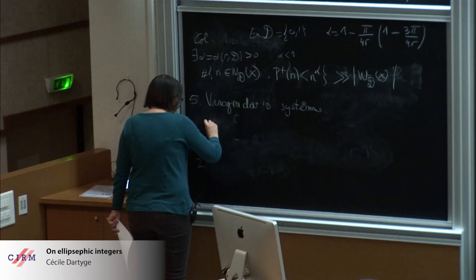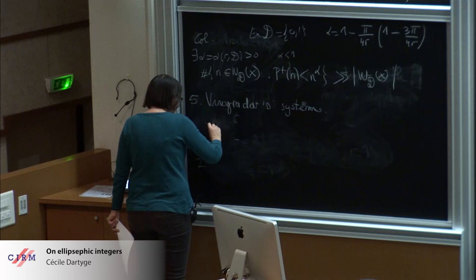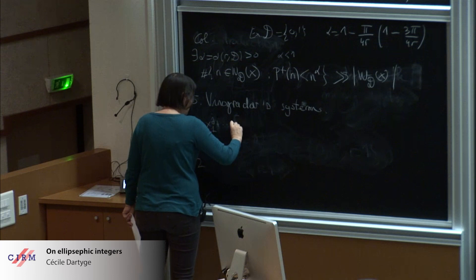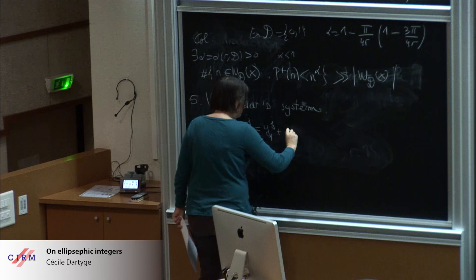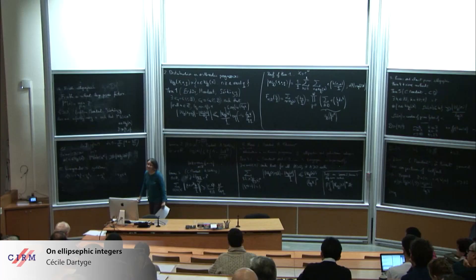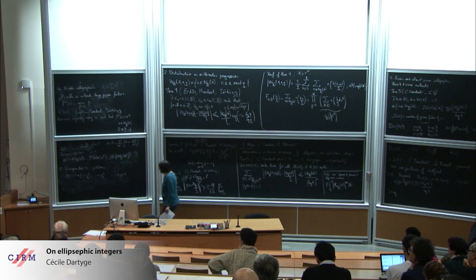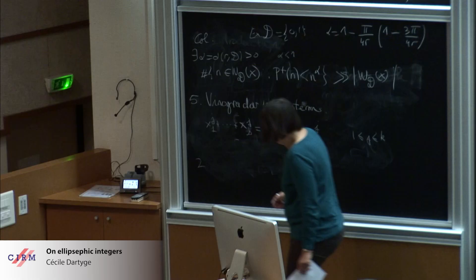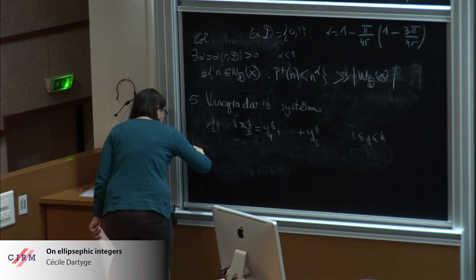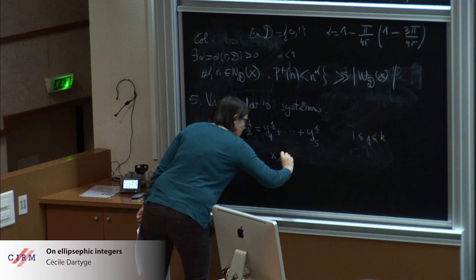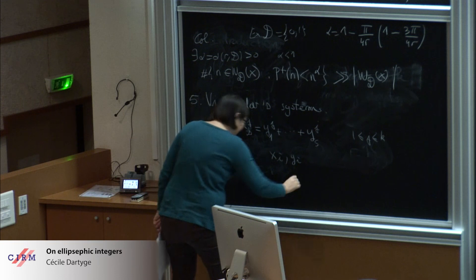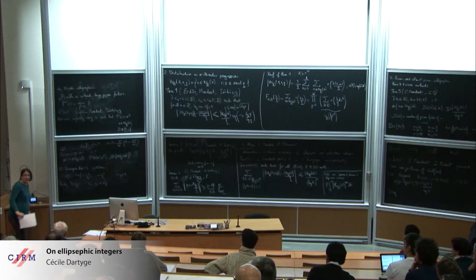The Vinogradov systems - it is systems of shape we have to solve x1 to g plus xs to g equal to y1. Recently there was a very deep result of Bourgain and Demeter. Kirstie Briggs studied these problems with x by supposing that x_i and the y are ellipsific. She obtained a general formula, complicated to enounce in all this generality.